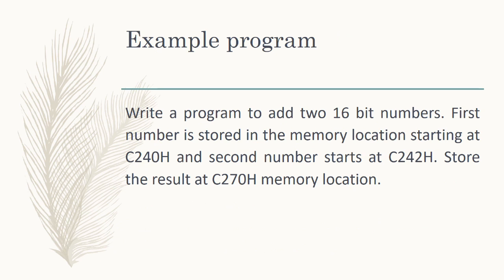Let us now see a program to add two 16-bit numbers. The first number is stored in memory locations C240H and C241H, since it is a 16-bit number and each memory location holds 8 bits. The second number starts at C242H and C243H. The result is to be stored at memory location C270H.